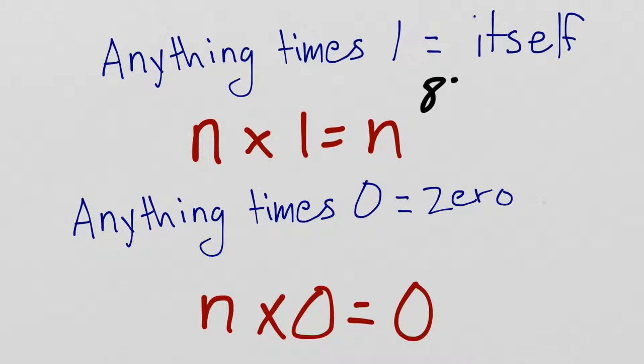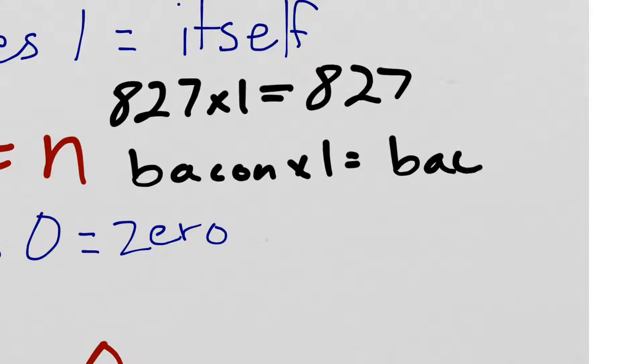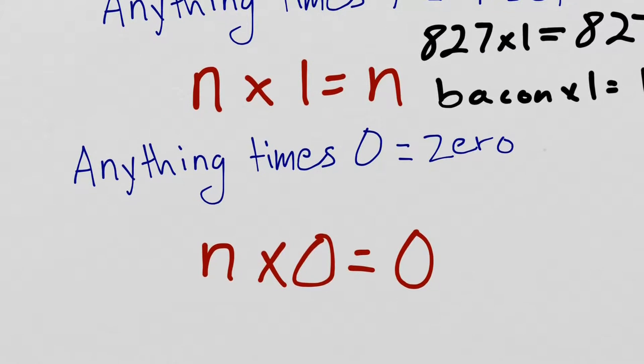So, I could do 827 times one. And, that's just going to equal 827. I could do funny things. I could do bacon times one. It's still just going to equal bacon. Anything times one equals itself.